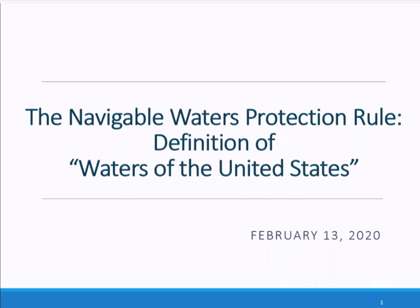At this point, the rule has been submitted to the Office of the Federal Register but is not yet published. The rule will become effective 60 days after it is published in the Federal Register. The agencies have streamlined the definition of Waters of the United States to include four clear categories of jurisdictional waters, provide specific exclusions for many water features that have traditionally not been federally regulated, and to define terms in the regulatory text that have never been defined before.